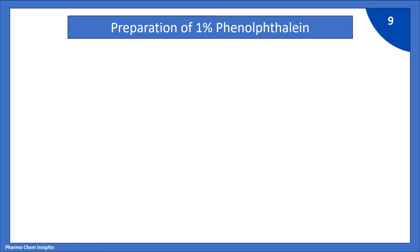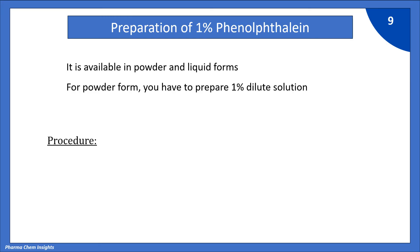Now preparation of indicator that is 1% phenolphthalein. Phenolphthalein is available in powder and liquid forms. For liquid forms you can use it directly but for powder form you have to prepare 1% dilute solution of phenolphthalein. So let us see the procedure how to prepare. Weigh 1 gram of phenolphthalein and dissolve it in 100 ml of ethanol and store in a stoppered glass bottle.